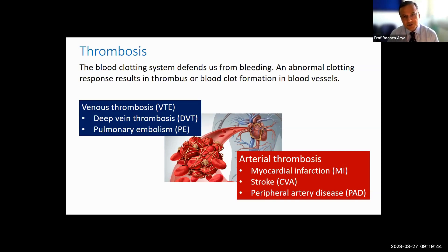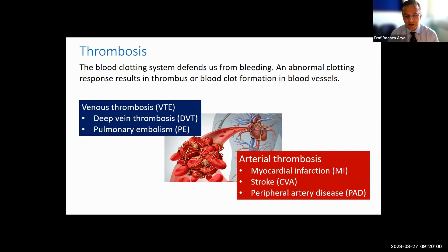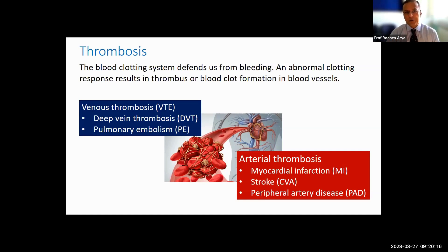In contrast, the low-pressure side of the circulation are the veins that return blood to the heart. Clots here are typically deep vein thrombosis, usually in the legs, or if the thrombus embolizes to the lungs, pulmonary embolism. In venous thrombosis, the clots are typically red cell rich — a mass of red cells bound together by fibrin, with platelets and clotting proteins.